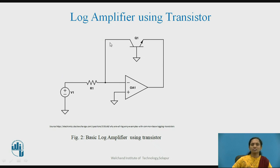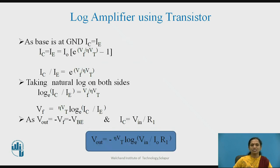Here the p-n junction diode is replaced by an NPN transistor. The base terminal is grounded and, applying the concept of virtual ground again, the voltage at the inverting terminal is zero. So I1 equals Ic, the current flowing through the collector, which also flows through the emitter since the base is grounded. We can analyze this using the equation for Ic, which acts as a p-n junction diode, so the same equation applies. The collector current Ic equals I0 times exponential of Vf by eta·Vt.